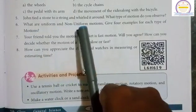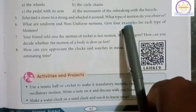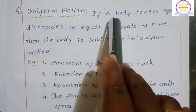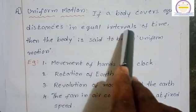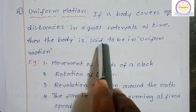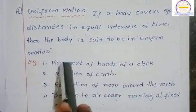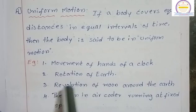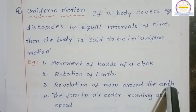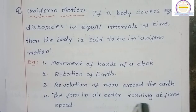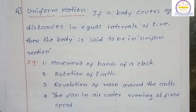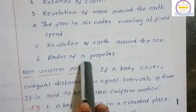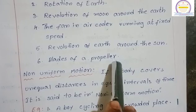Sixth question: What are uniform and non-uniform motions? Give four examples for each type of motion. Uniform motion: If a body covers equal distance in equal intervals of time, then the body is said to be in uniform motion. Examples: movement of hands of a clock, rotation of earth, revolution of moon around the earth, the fan in air cooler running at fixed speed, revolution of earth around the sun, blades of a propeller.